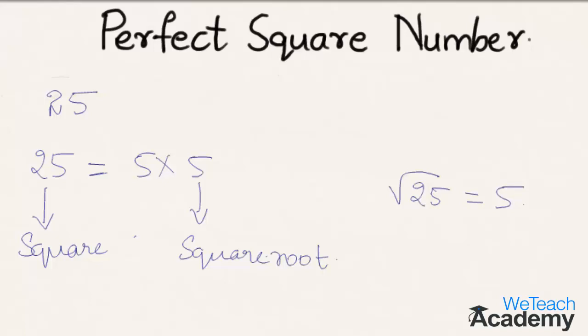So now let us proceed to perfect square number. So now what is a perfect square number? If a number can be written as a product of two equal factors, then the number is said to be a perfect square number.